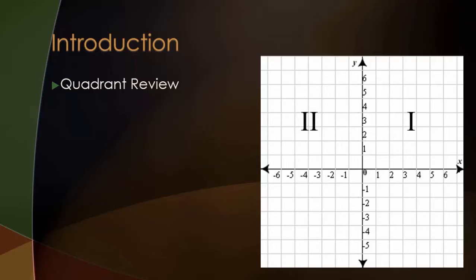Quadrant 1 is here, quadrant 2, quadrant 3, and quadrant 4. We need to know this because we're going to be moving specific points and shapes in and to different quadrants.